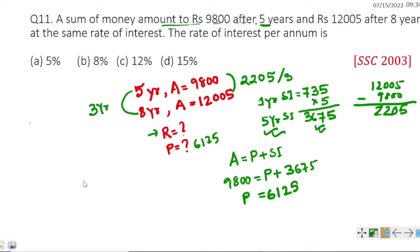Now applying the simple interest formula: SI = PRT divided by 100.